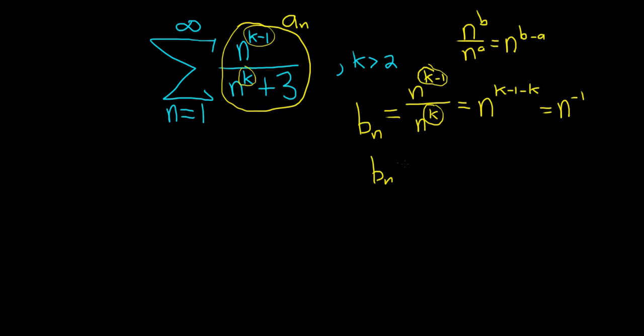In other words, b sub n is equal to one over n. So b sub n has the same growth rate as a sub n.